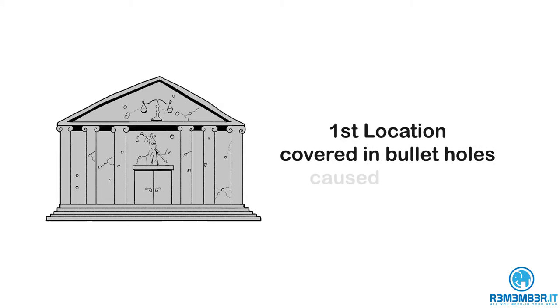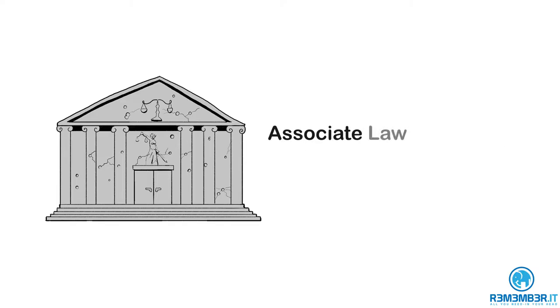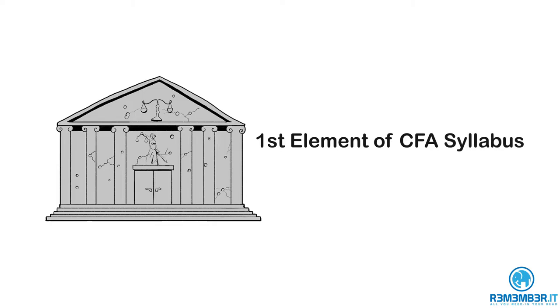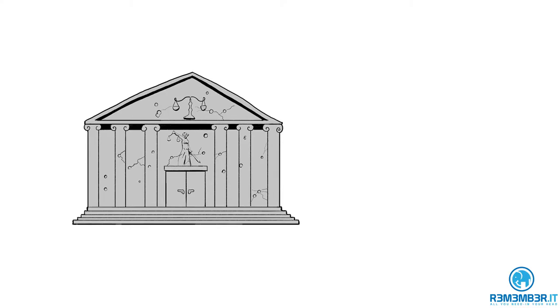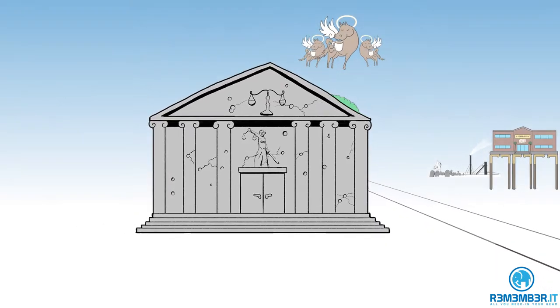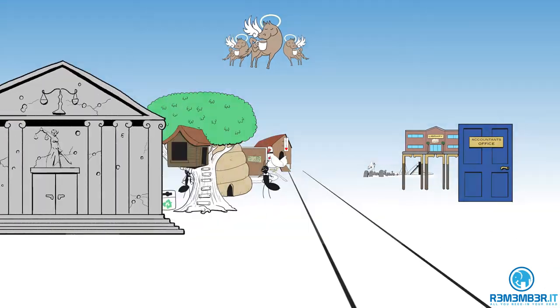The first location is here — it's the CFAVIL law court, where the ethics and professional standards syllabus is covered. You know it's the first location because it's covered in bullet holes caused by a gun. By associating the law courts with ethics and professional standards, you can easily remember that the first element of the CFA syllabus is ethics and professional standards.